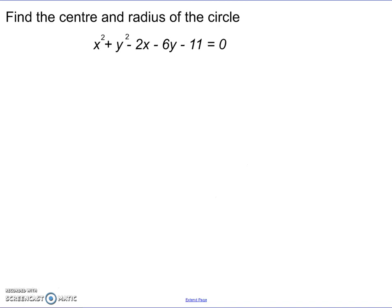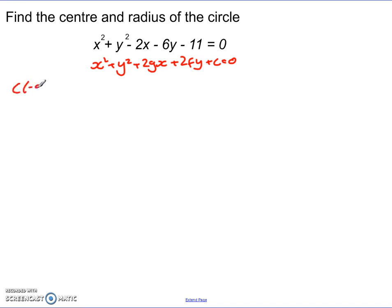The first question: find the radius of the circle and the centre when its equation is given by x squared plus y squared minus 2x minus 6y minus 11 equals 0. Remember, our general equation of a circle is x squared plus y squared plus 2gx plus 2fy plus c equals 0. We were able to use that form to calculate the centre and the radius.